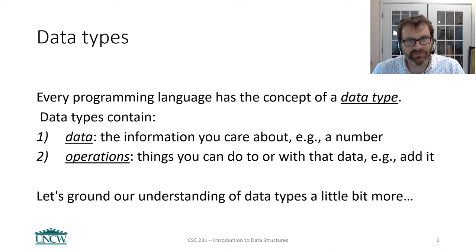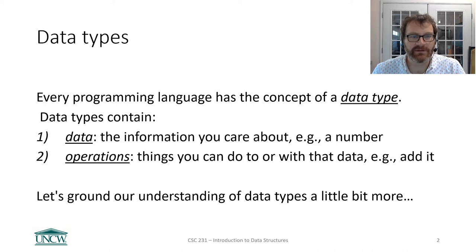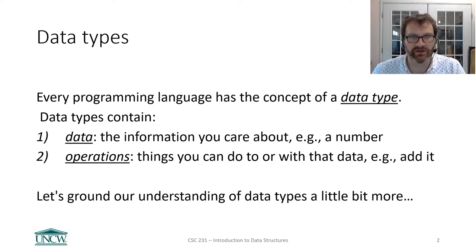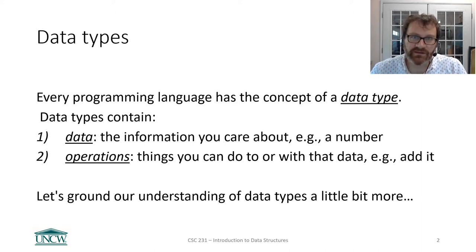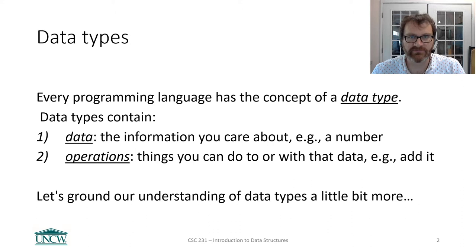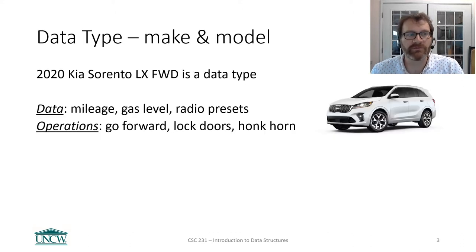What is a data type, really? Well, it is two things, and you definitely need to know these two things. First, data types contain data — the information that you care about, like a number value or the characters in a string. The other thing data types contain are operations — the things that you can do to or with that data. Let's take a look at a metaphor here, a real-world example.